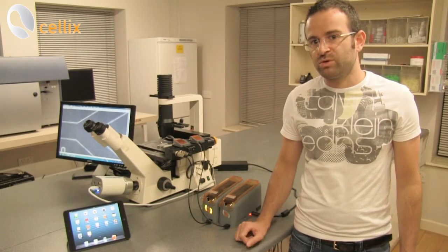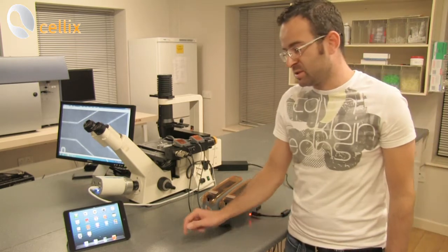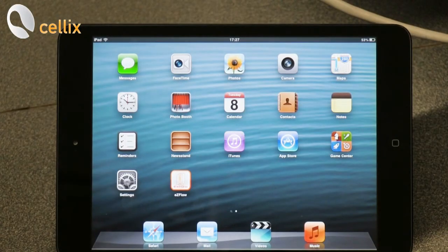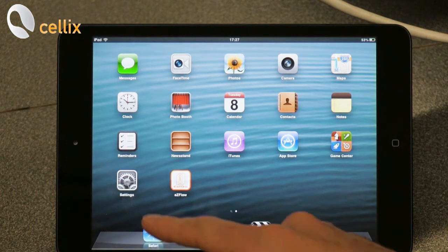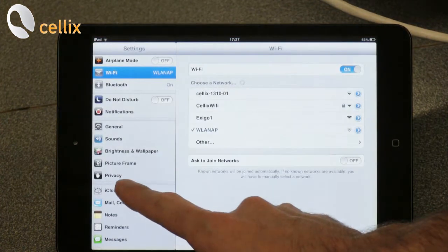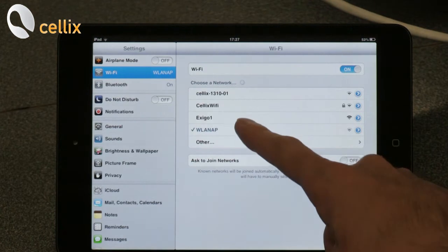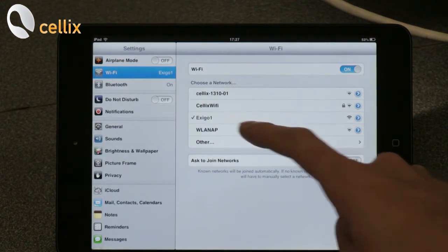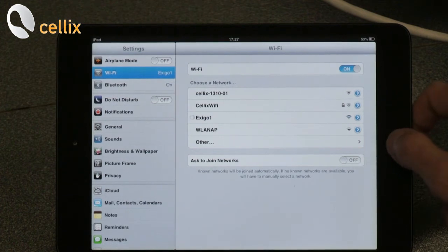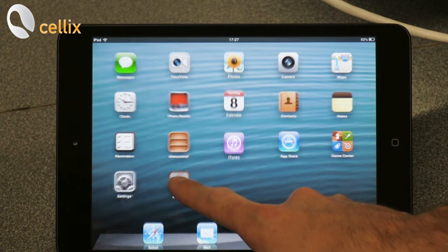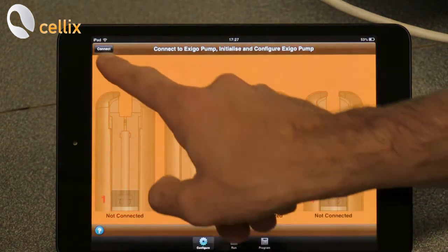Now I will show you how to control the two pumps using the iPad mini. First I want to show you how to connect to a Wi-Fi network established by the Exigo pump. So we click on the settings icon and then we can see the networks available. We select Exigo, close the settings and then we start the Exigo app and we click connect.